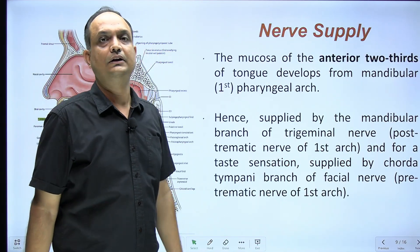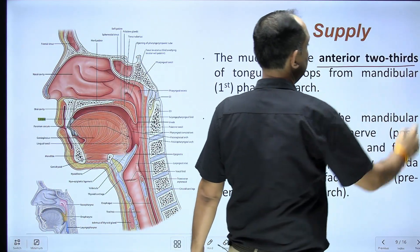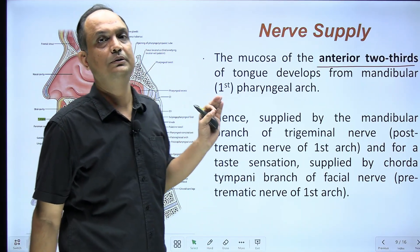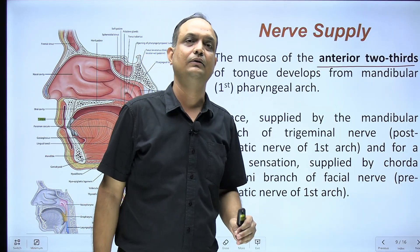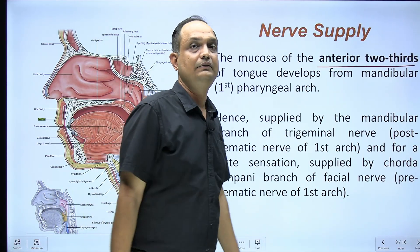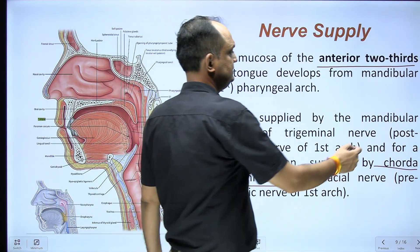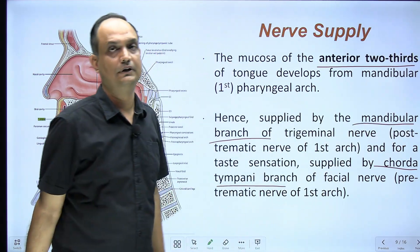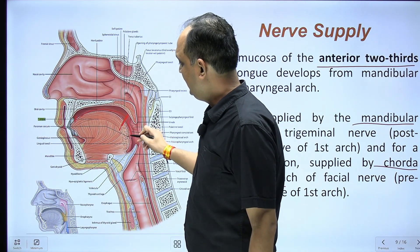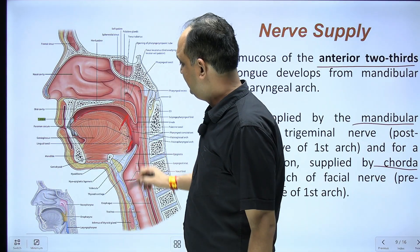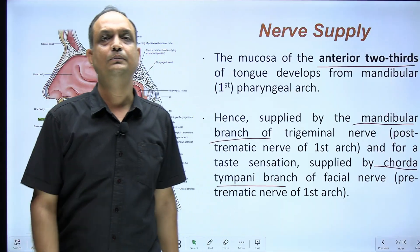Regarding the nerve supply of the tongue: the anterior two-thirds develops from the mandibular arch. The mandibular arch has two nerves — the mandibular nerve (post-trematic) carrying general sensation, and the chorda tympani (pre-trematic) carrying taste sensation for the anterior two-thirds of the tongue.